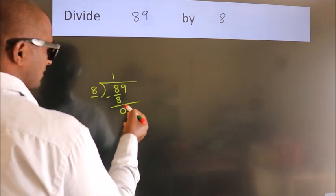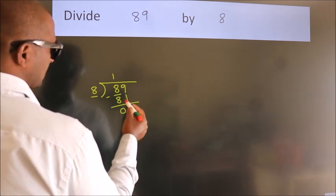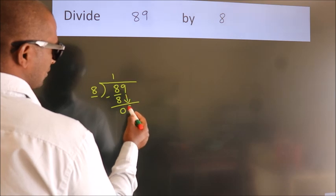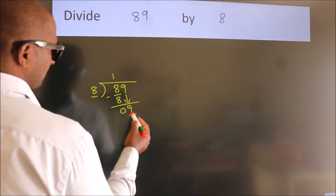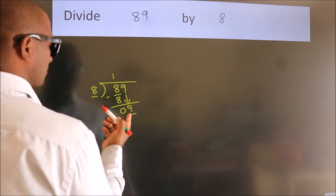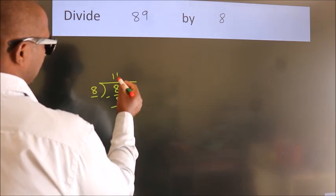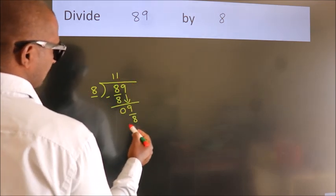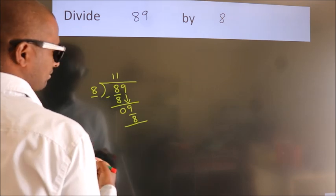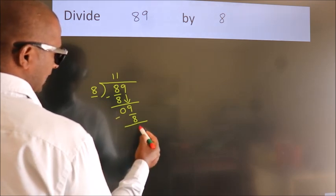After this, bring down the beside number. So 9 down. So 9. A number close to 9 in 8 table is 8 once, 8. Now we subtract. We get 1.